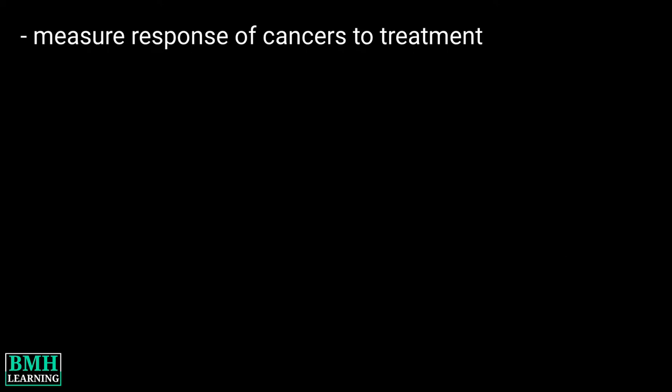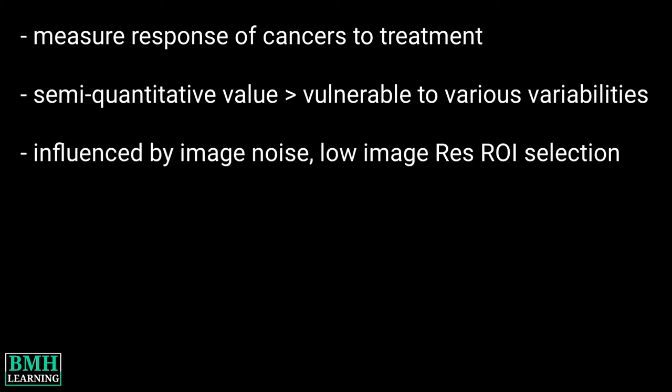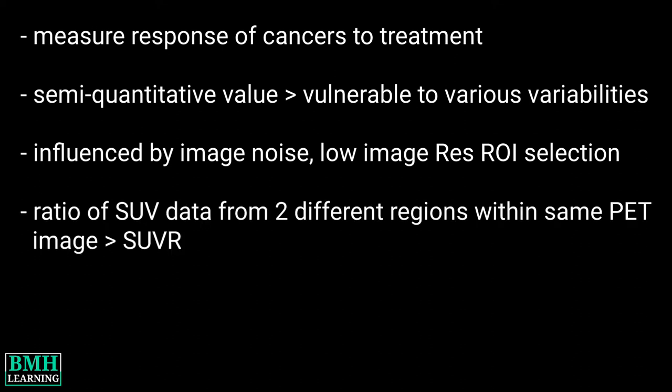SUV is a semi-quantitative value, as it is vulnerable to other sources of variability. SUV may be influenced by image noise, low image resolution, and variable user-biased region of interest, or ROI, selection.